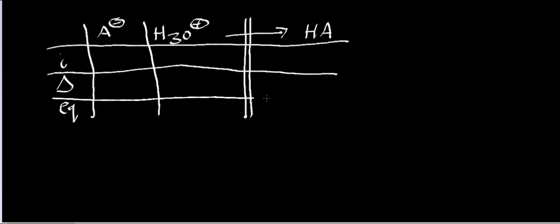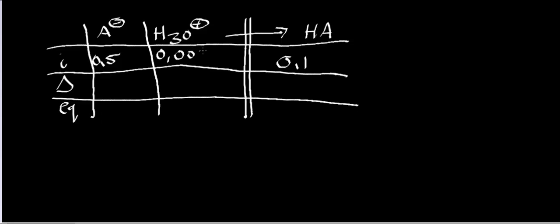What were our initial concentrations? Our initial concentration of A- was 0.5 molar. Our concentration of HA was 0.1 moles. And my initial concentration of hydronium — before any reactions happen — I'm theoretically starting off with 0.0025 moles of hydronium, right at T = 0.